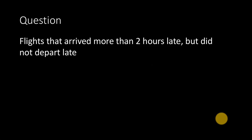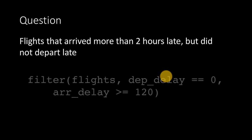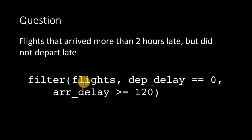For flights that arrived more than 2 hours late but did not depart late: arrival delay should be >= 120, and departure delay should be <= 0. We say less than or equal to 0 rather than equals 0, because some flights have a negative departure delay, meaning they left slightly before their scheduled departure time. So the condition is: filter(flights, dep_delay <= 0, arr_delay >= 120).